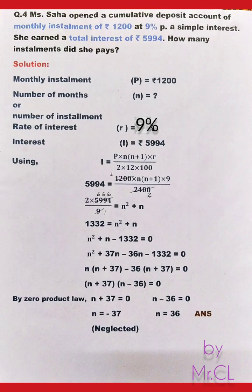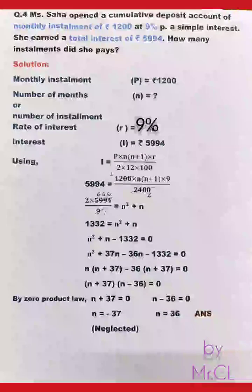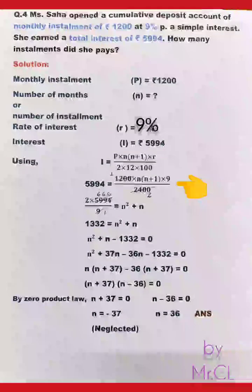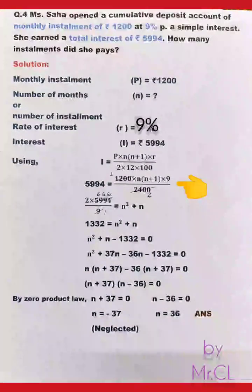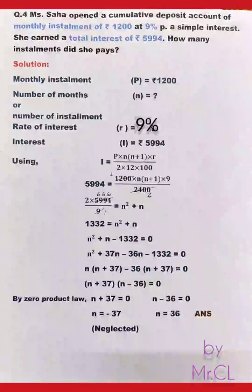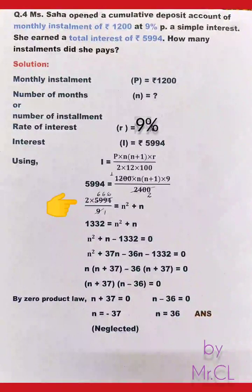Since interest is given, we use I = P × n(n+1) × R ÷ (2 × 12 × 100). Substituting: 5994 = 1200 × n(n+1) × 9 ÷ 2400. Dividing 2400 by 1200 gives 2. After cross-multiplication: 2 × 5994 ÷ 9 = n² + n.